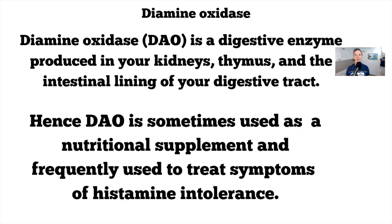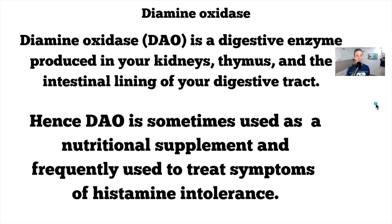DAO is a digestive enzyme produced in the kidneys, thymus, and the intestinal lining of your digestive tract. If there is a shortage, DAO is sometimes used as a nutritional supplement and is frequently used to treat symptoms of histamine intolerance. If you're having problems with a pathogen you can't control and you're not sure what's causing the histamine problem, you could look at the other side — supplement the DAO to do the cleanup job.